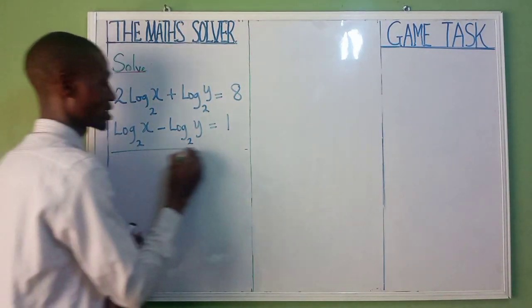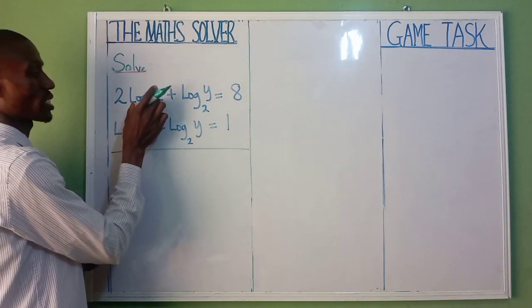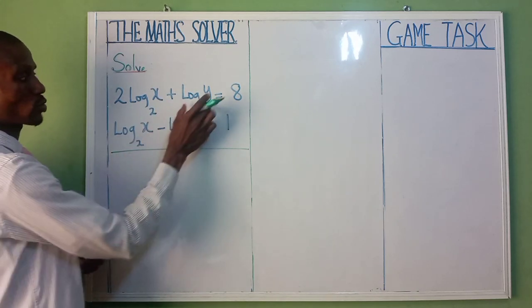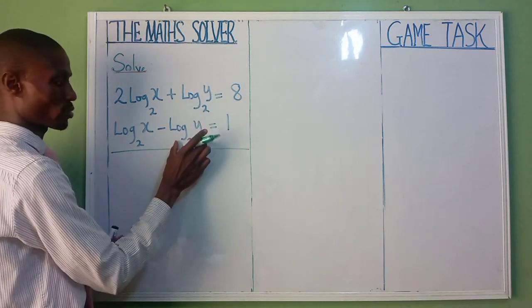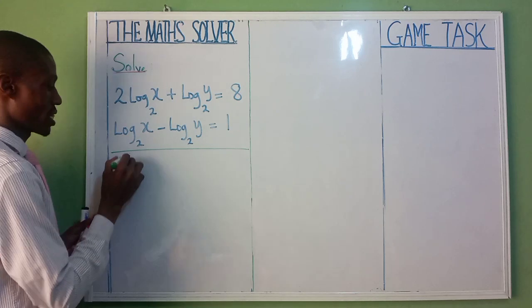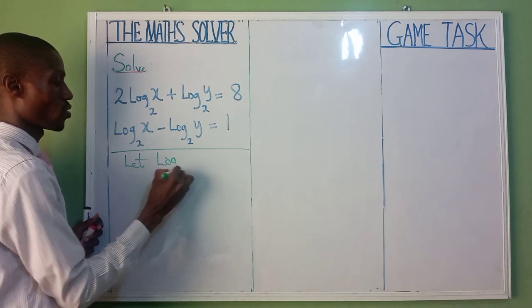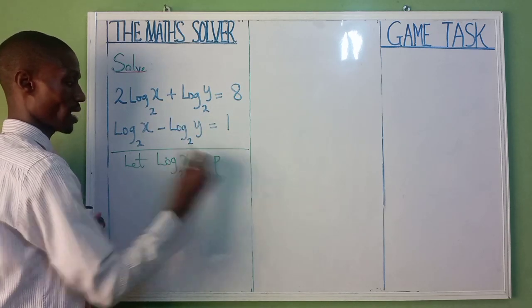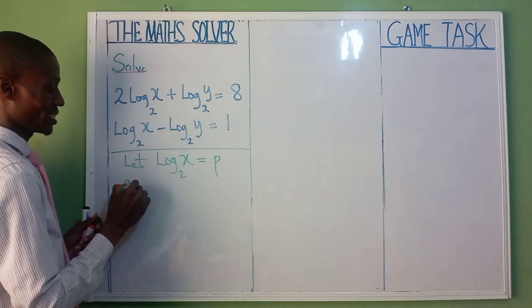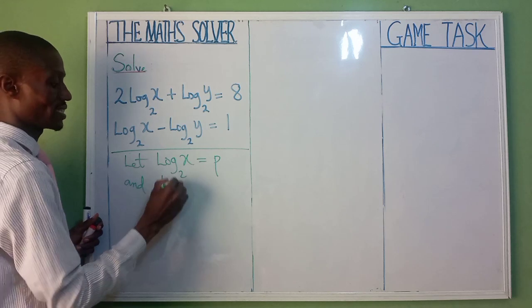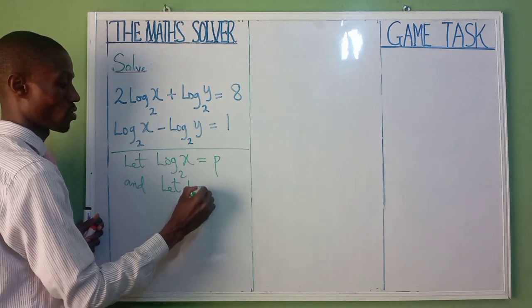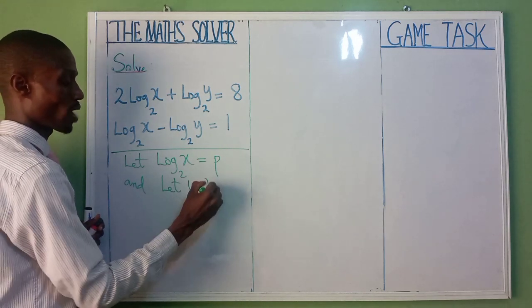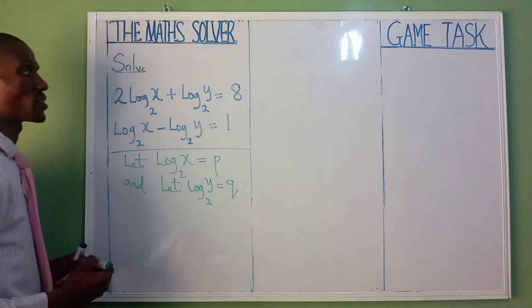The first thing I'm going to say, as you can see, we have log 2x here, up here, likewise down. We also have log 2y up, likewise down. So let's say log 2x, let's first one, equal to p, and let's log 2y equal to q. I want to represent this.